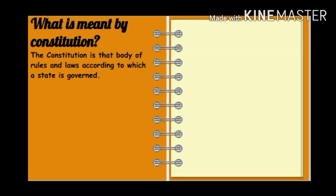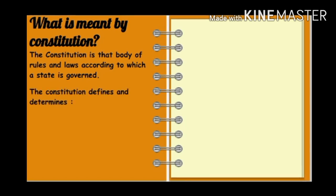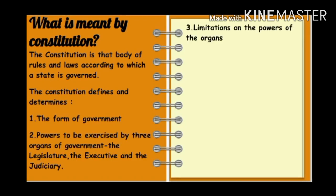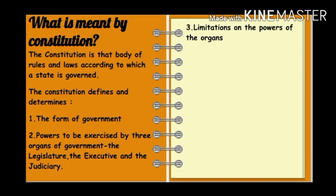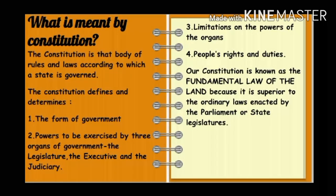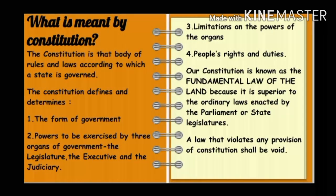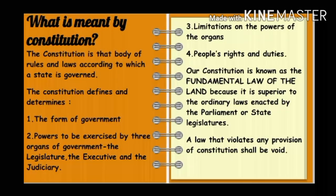What is meant by constitution? The constitution is that body of rules and laws according to which a state is governed — and here, state means country. The constitution defines and determines the form of government, the powers to be exercised by the three organs of the government — the legislature, the executive, and the judiciary — limitations on the powers of these organs, and people's rights and duties. Our constitution is known as the fundamental law of the land because it is superior to the ordinary laws enacted by the parliament or state legislatures. A law that violates any provision of the constitution shall be void, meaning it has no value or authority.